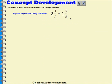Let's say this expression using unit form. What would it look like if we thought about it as a unit form? We can see that we have two ones, one eighth, plus one one, five eighths.